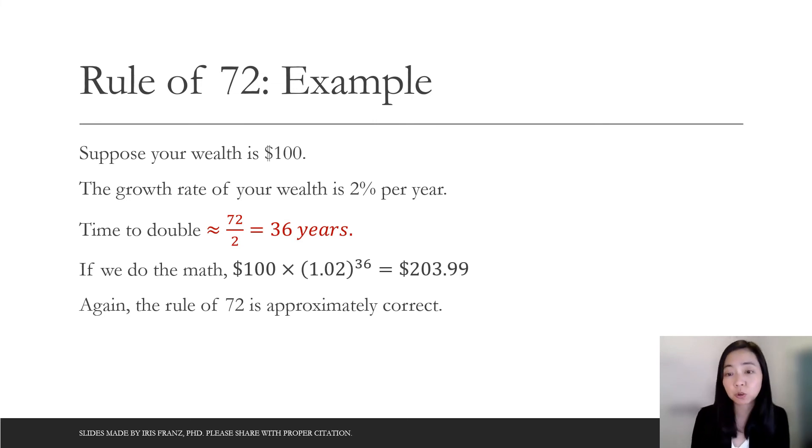Now what happens if your growth rate is 2% instead of 1%? Then again, use the rule of 72. You do 72 divided by 2, which is 36. So it takes 36 years approximately for your wealth to double. If you do the math, 100 times 1.02 to the power of 36, so 36 years, then you get 203.99, which is approximately 200. So you can see again, the rule of 72 works. It is approximately correct.